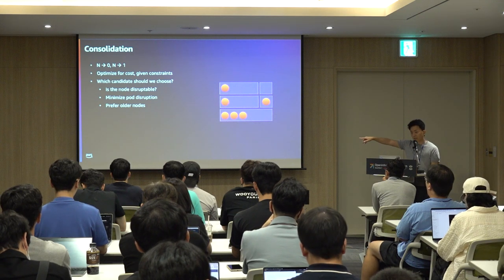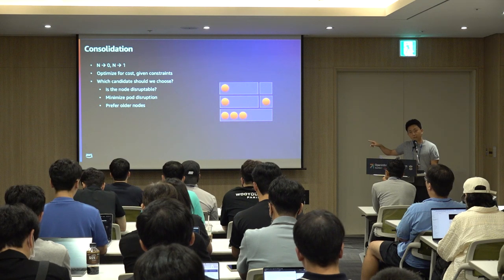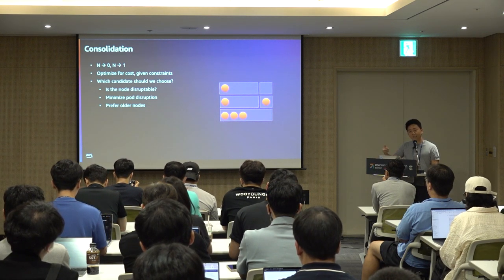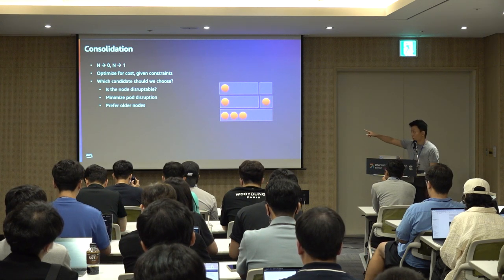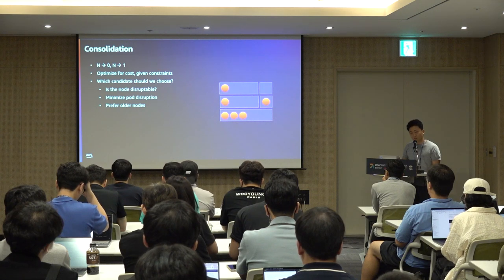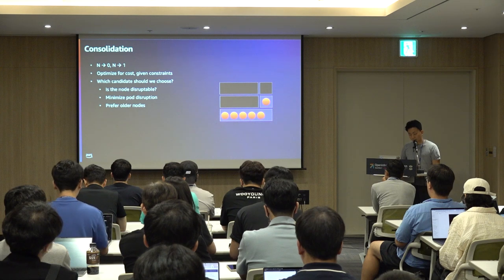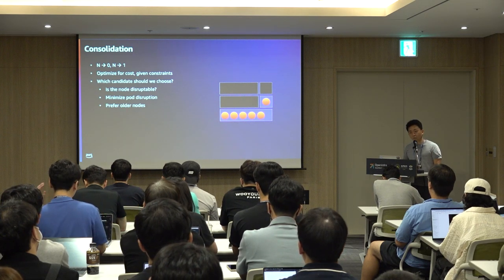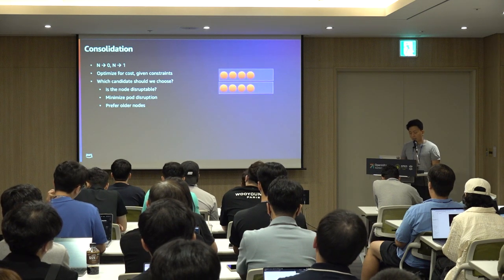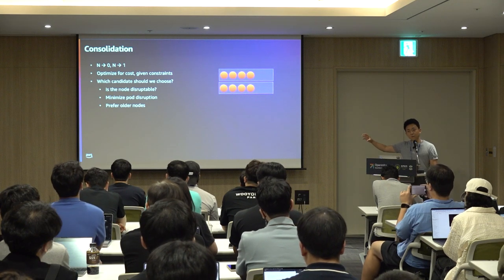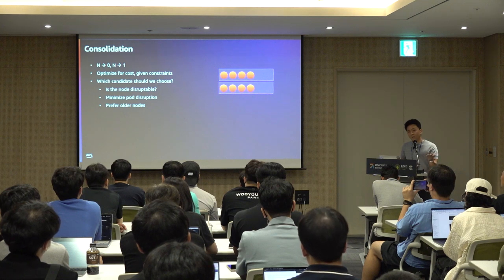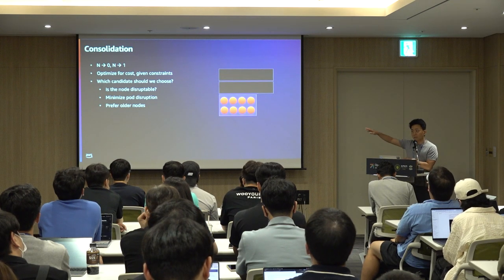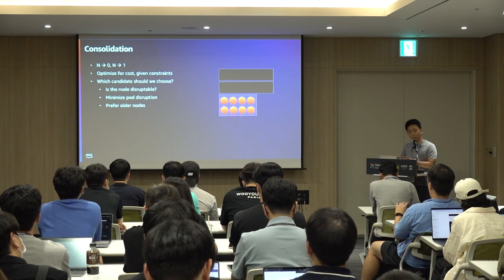Karpenter prefers older worker nodes when all conditions are equal, ensuring nodes are refreshed regularly. N-to-zero consolidation means consolidating multiple nodes down to zero. N-to-one consolidation means consolidating multiple nodes into one smaller, cheaper instance — so underutilized, under-allocated worker nodes can be moved to more cost-effective instances.